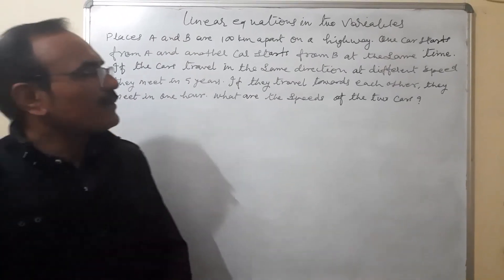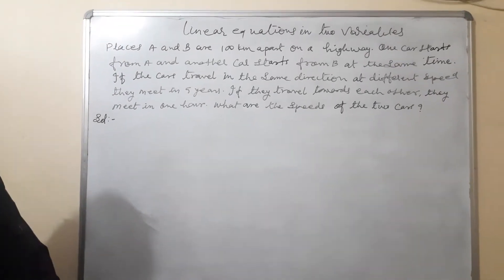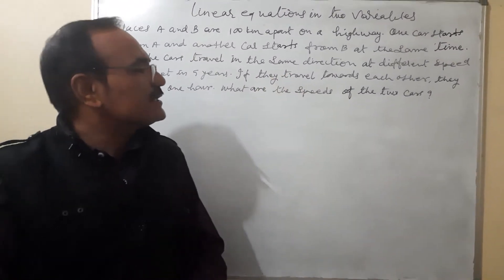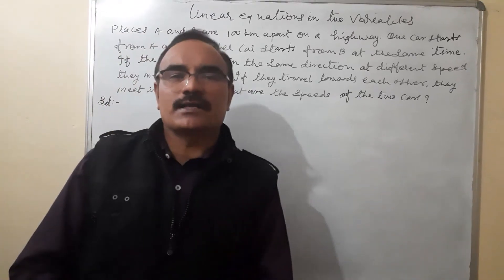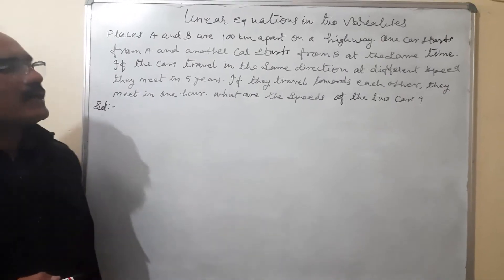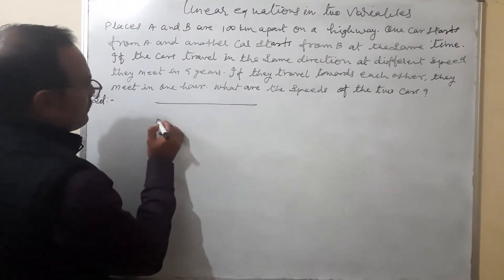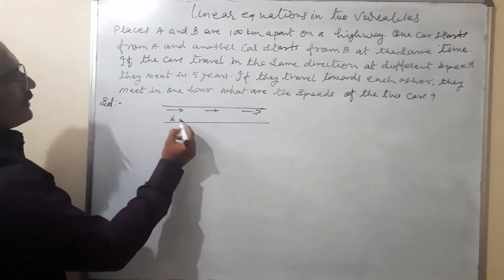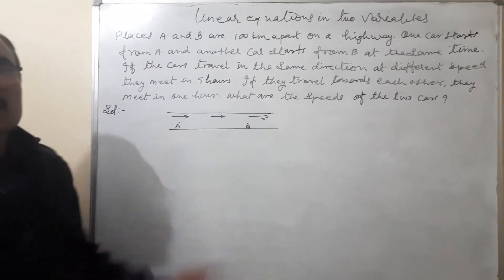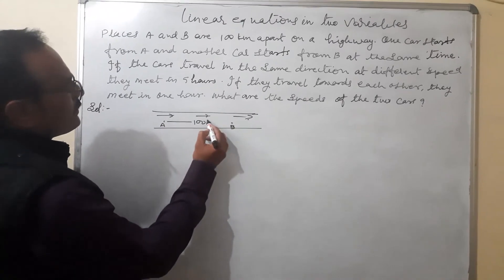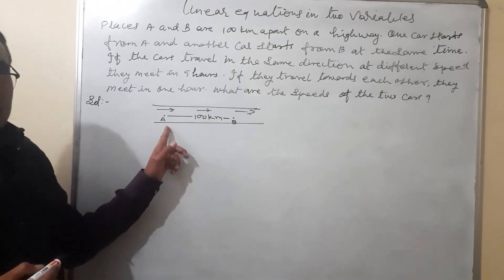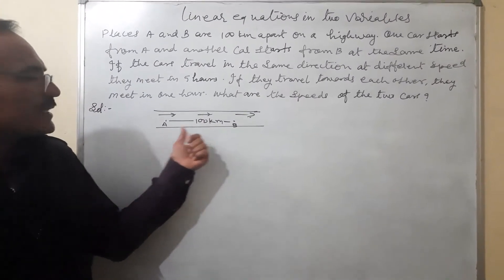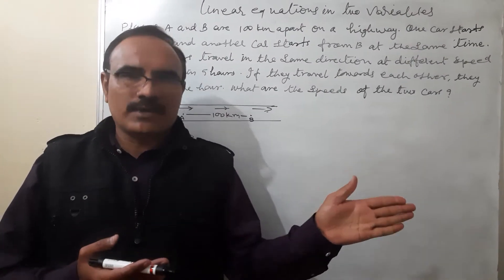Next problem: places A and B are 100 km apart on a highway. One car starts from A and another from B at the same time. If they travel in the same direction at different speeds, they meet in 5 hours. If they travel towards each other, they meet in 1 hour. What are the speeds of the two cars? A and B are two positions with a distance of 100 km between them.